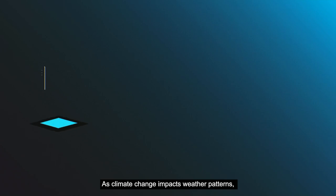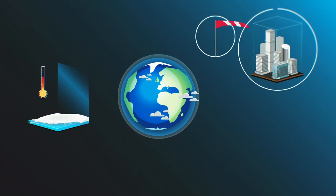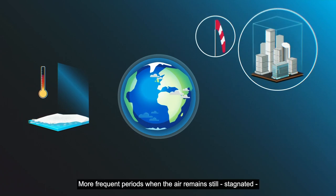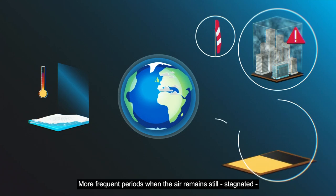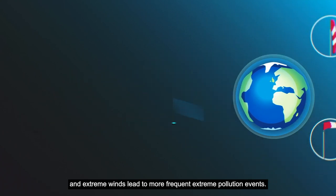As climate change impacts weather patterns, it leads to changes in air circulation. More frequent periods where the air remains still, stagnated and extreme winds lead to more frequent extreme pollution events.